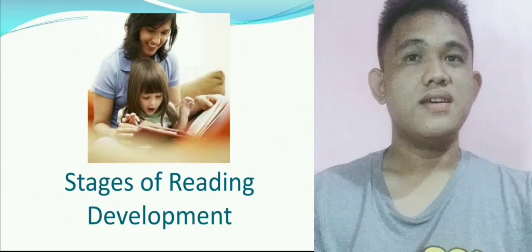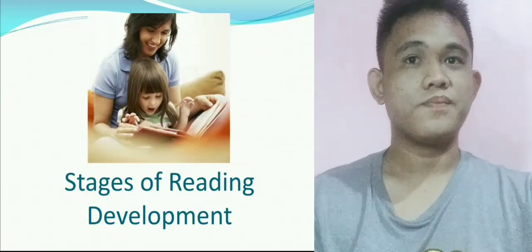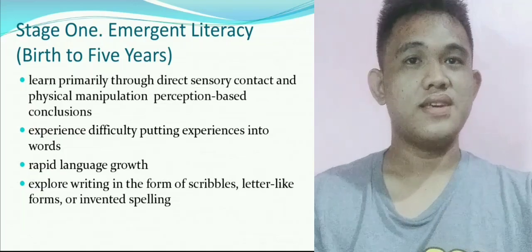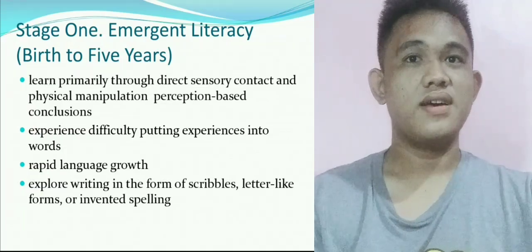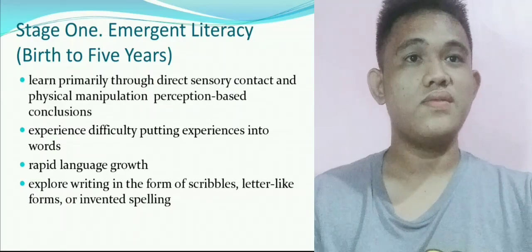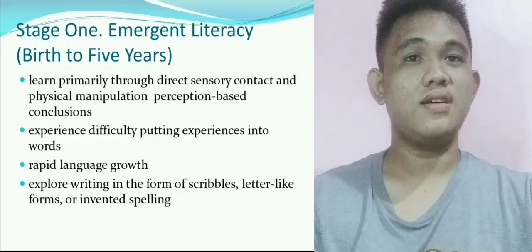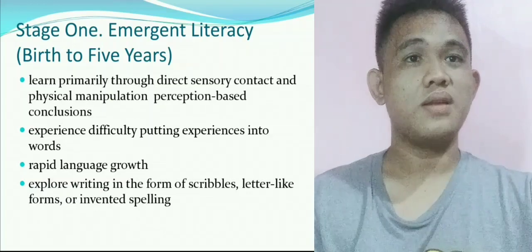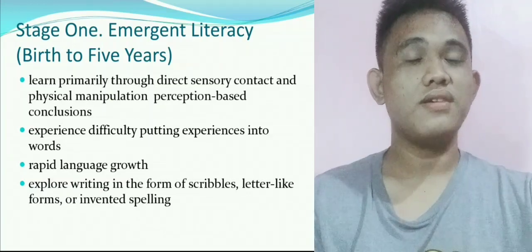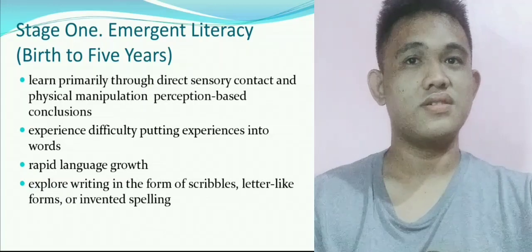Next are the Stages of Reading Development. Stage 1: Emergent Literacy, Birth to 5 Years. This refers to the knowledge, skills, and attitudes that a child develops in relation to reading and writing throughout the early childhood period, starting at birth and before the onset of conventional reading and writing instruction.